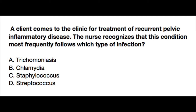A client comes to the clinic for the treatment of recurrent pelvic inflammatory disease. The nurse recognizes that this condition most frequently follows which type of infection? The given answer choices are: trichomoniasis, chlamydia, staphylococcus, streptococcus. You can pause and read the question, answer it, and come back for the correct answer and explanation.